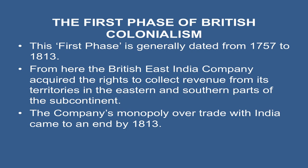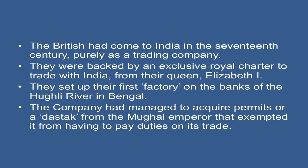The first phase is generally dated from 1757 to 1813, from where the British East India Company acquired the rights to collect revenue from its territories in the eastern and southern parts of the subcontinent. The company's monopoly over trade with India came to an end by 1813. The British had come to India in the 17th century purely as a trading company.